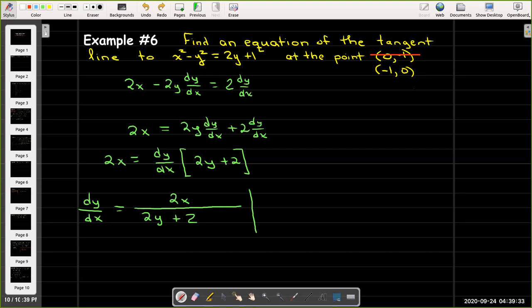And everything else is the same. We're going to go ahead and find dy by dx using implicit differentiation and use the same steps. We find that dy by dx is 2x over 2y plus 2.